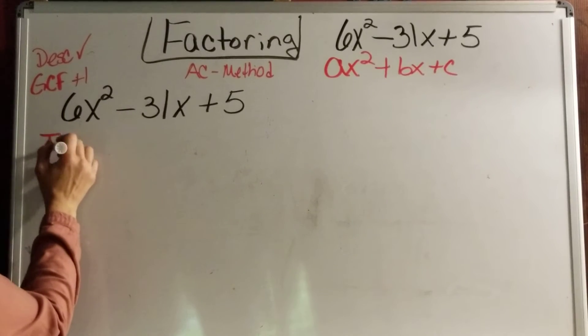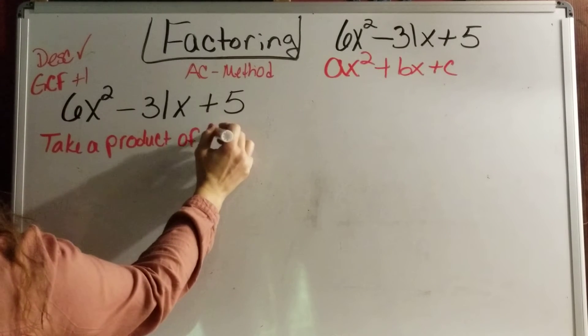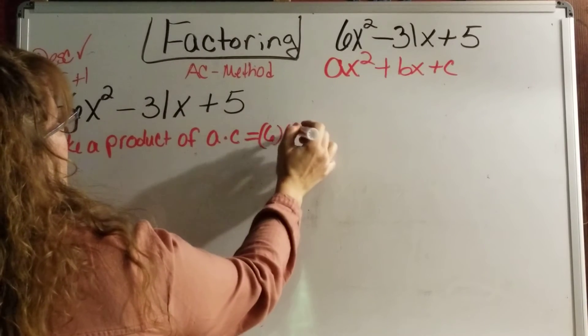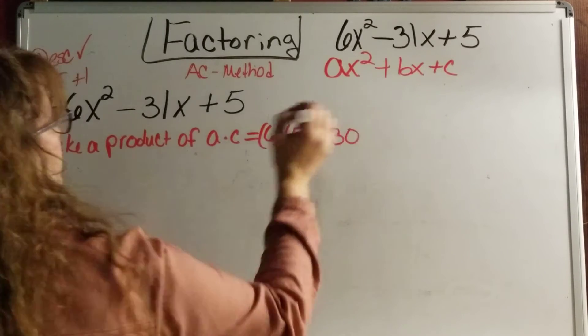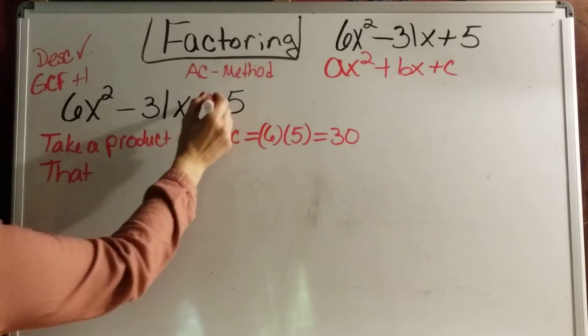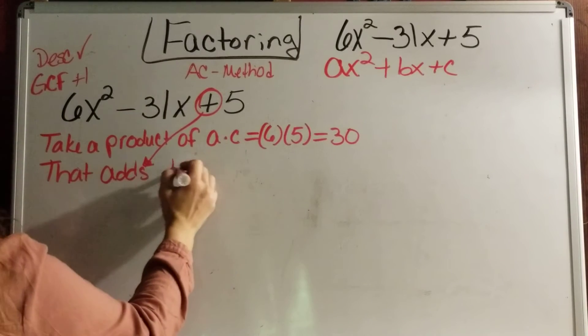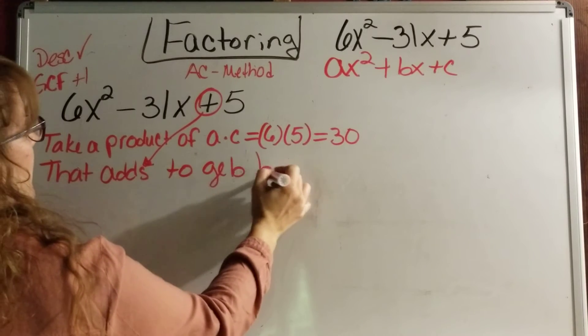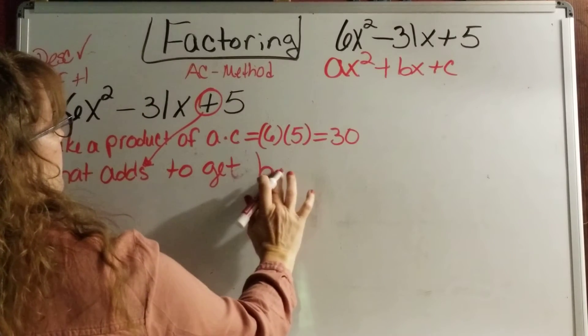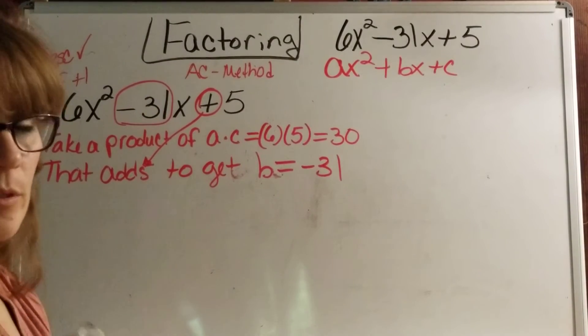So let's use AC method. We're going to take a product of A times C. And what is A times C here? It's 6 times 5, which is 30. Let's finish this out. That adds to get B. What is B? B is negative 31, right? That's B, negative 31.